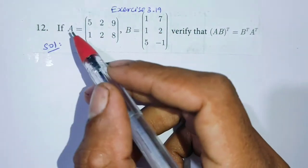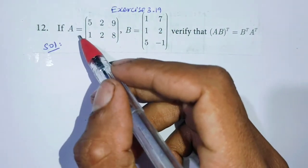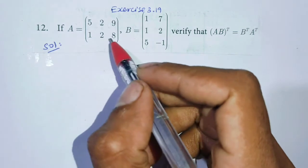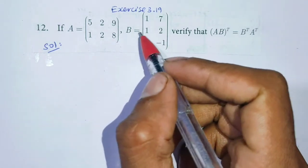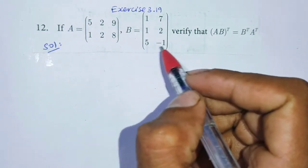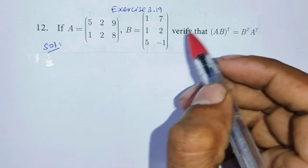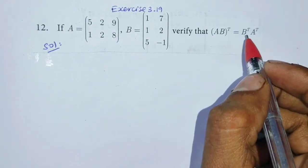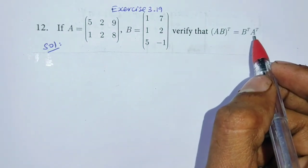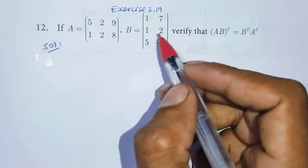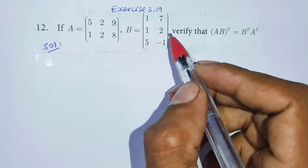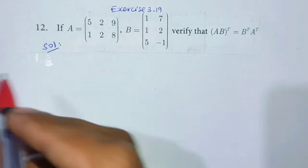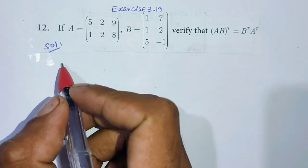Exercise 3.19, question number 12. If A is equal to matrix [5, 2, 9; 1, 2, 8] and matrix B is equal to [1, 7, 1; 2, 5, -1], verify that (AB) transpose equals B transpose into A transpose. We have two matrices and we will use this condition to verify. Okay, solution.